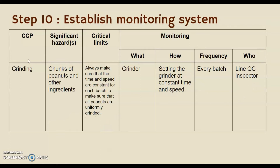The next CCP is grinding. The significant hazard found during grinding involves chunks of peanuts and added ingredients. The critical limit is to ensure that the time and speed are constant for each batch so that all peanuts are uniformly grinded. What we monitor is the grinder, by setting it at constant time and speed for every batch. The person in charge is the line inspector.